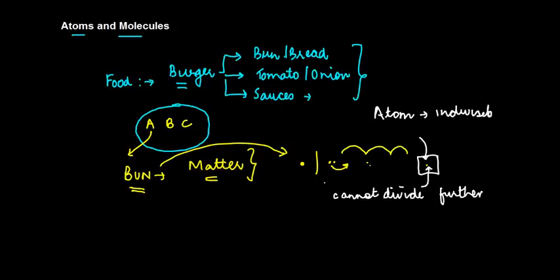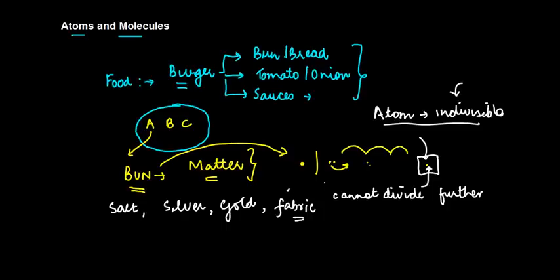We took an example of a burger, but it could be anything - salt, silver, gold, fabric. Any of these things, each one of them is made up of various components, just like we spoke in case of burger. If you start dividing any of these components, ultimately you're going to reach a stage where you cannot divide any further.